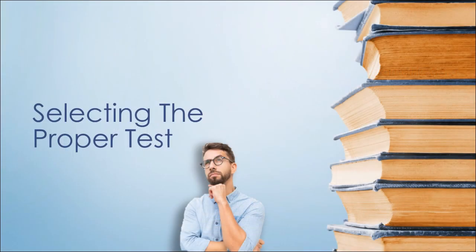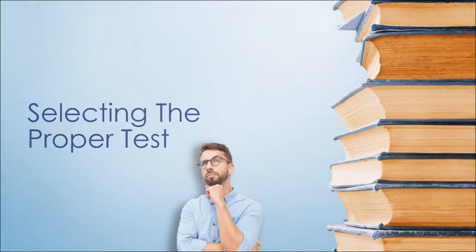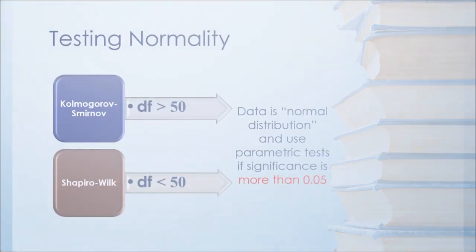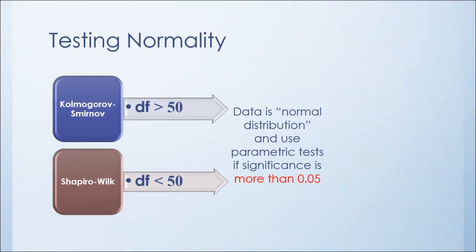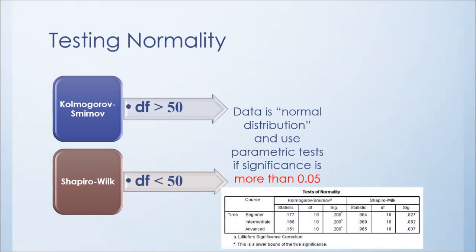Now take a deep breath and follow the sequence to get your proper test. Firstly, check the normality of your data. If your degree of freedom is higher than 50, then Kolmogorov-Smirnov test is used. If less than 50, Shapiro-Wilk test is preferred.